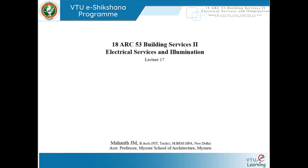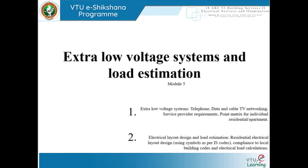With this last 3 or 4 series of lectures we will complete Module 5 and the entire subject as well. This module has two sub-headings: the first is extra low voltage system. We have been studying different voltage levels from Module 1 through Module 2, covering low, high, super high, and extra high voltages. This is the bottom end of the spectrum — the extra low voltage system.